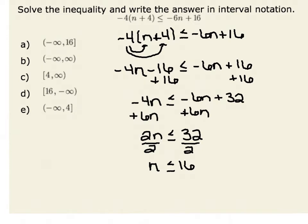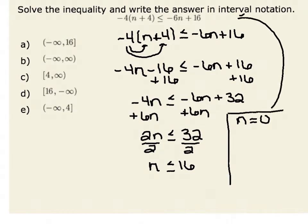Therefore, any value of n less than or equal to 16 should satisfy our inequality. We could check by picking any value less than or equal to 16. For example, if I chose n equal to 0, I could substitute this back into my original inequality to verify I have a true statement.